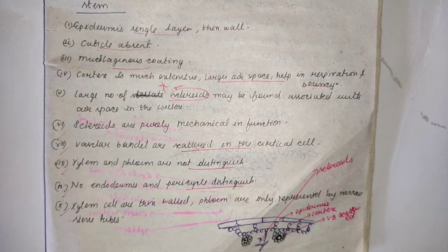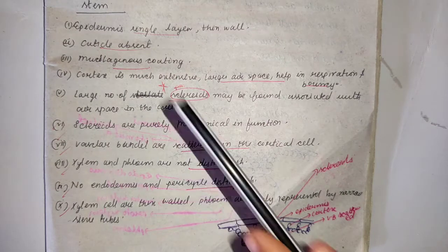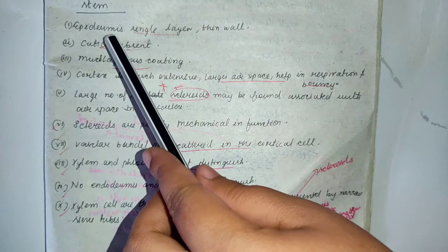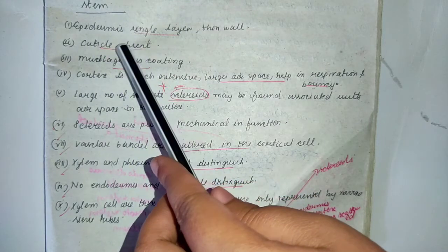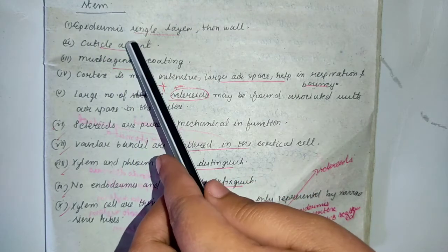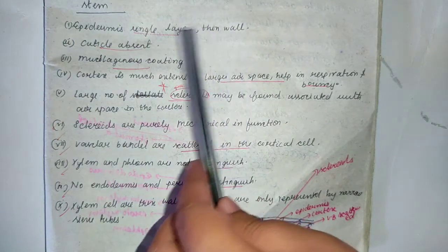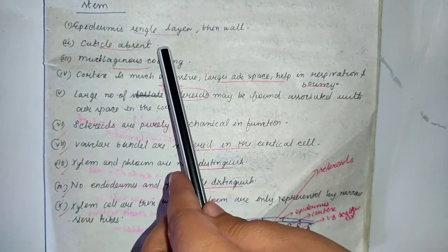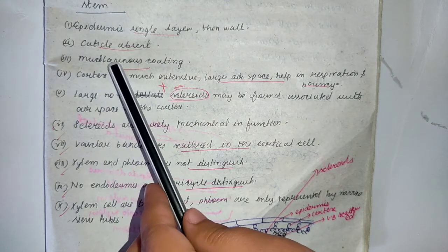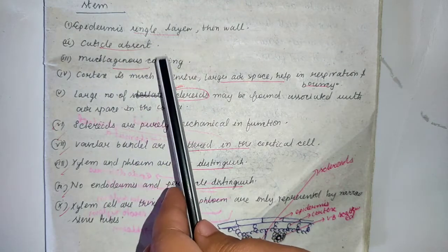Hello, in this video we will see the anatomy of stem of floating hydrophytes. The epidermis of the stem of floating hydrophytes is a single layer of thin-walled cells. Cuticle is absent in the stem, and mucilaginous coating is present.